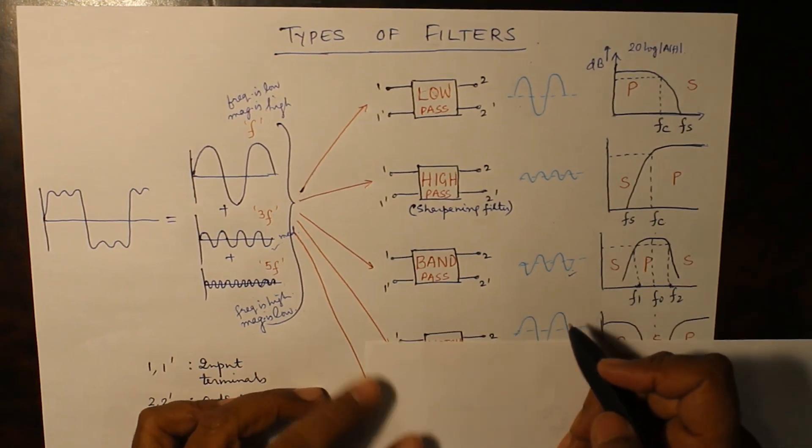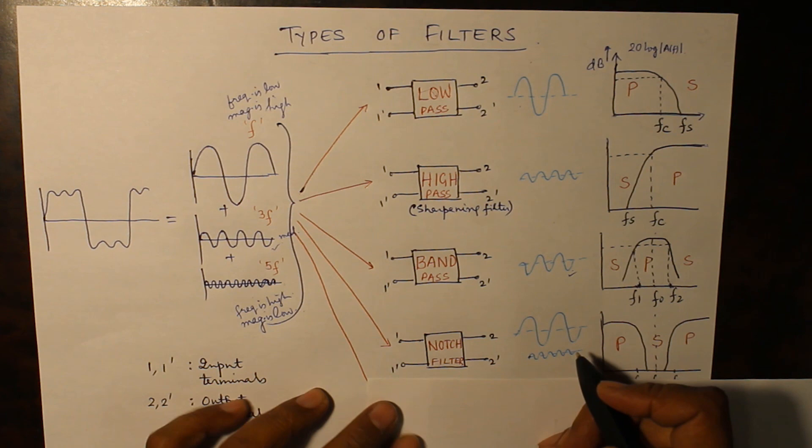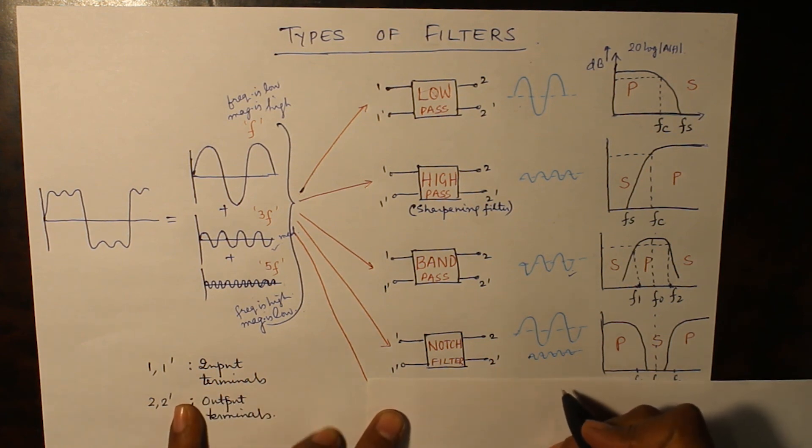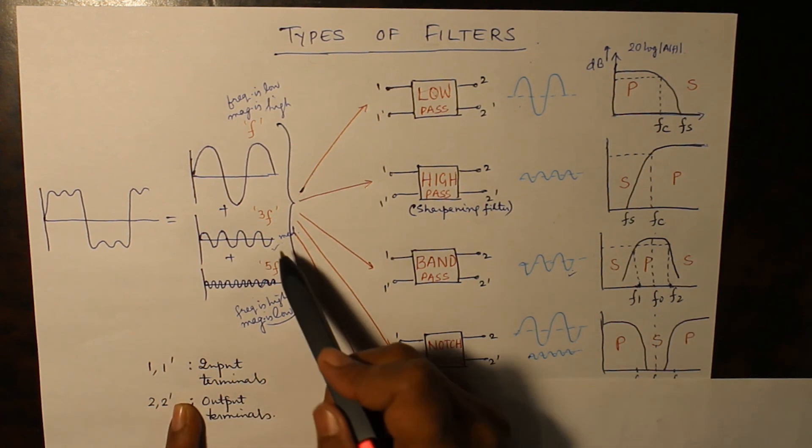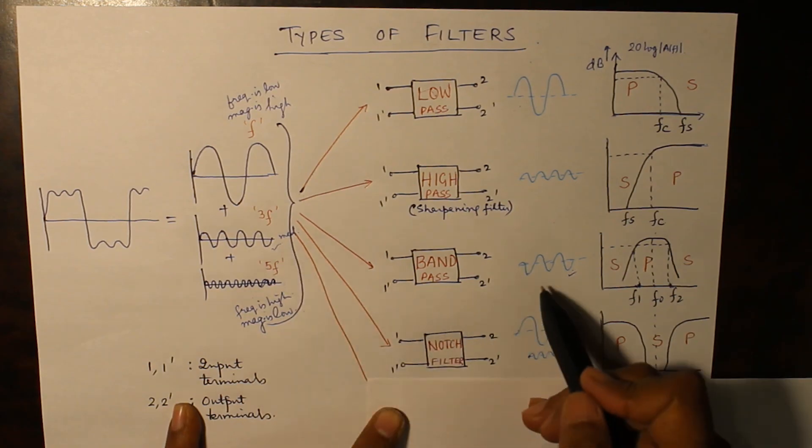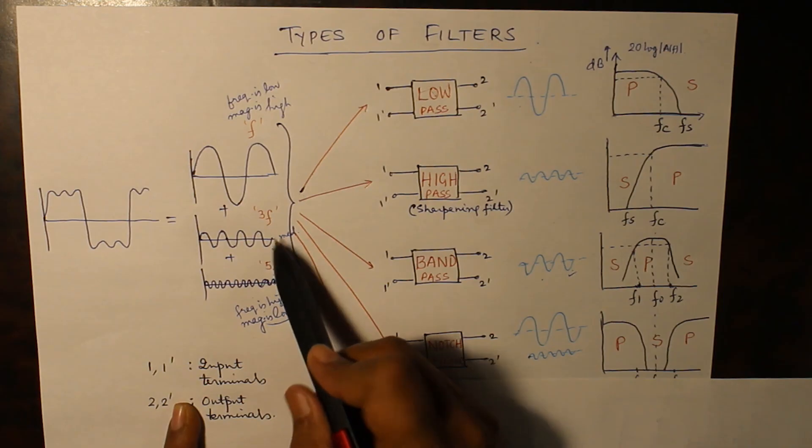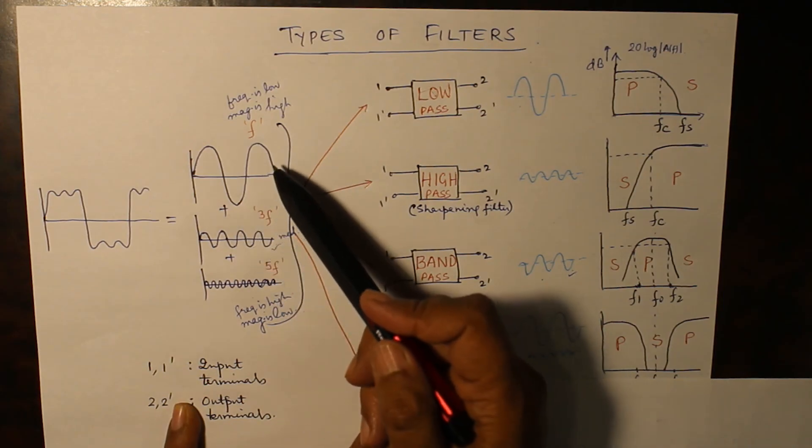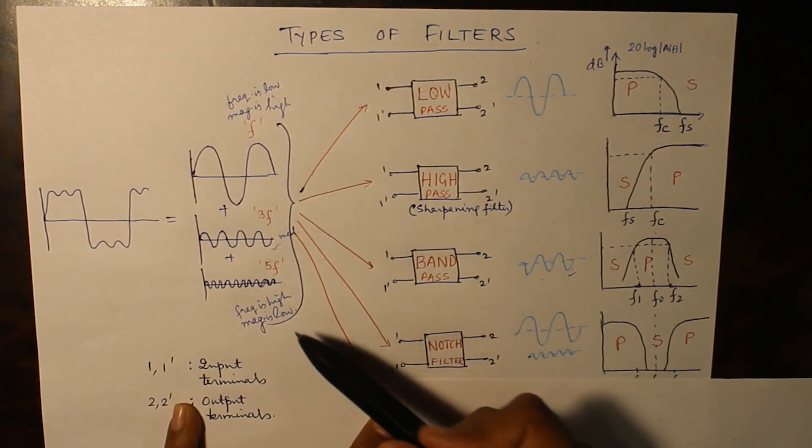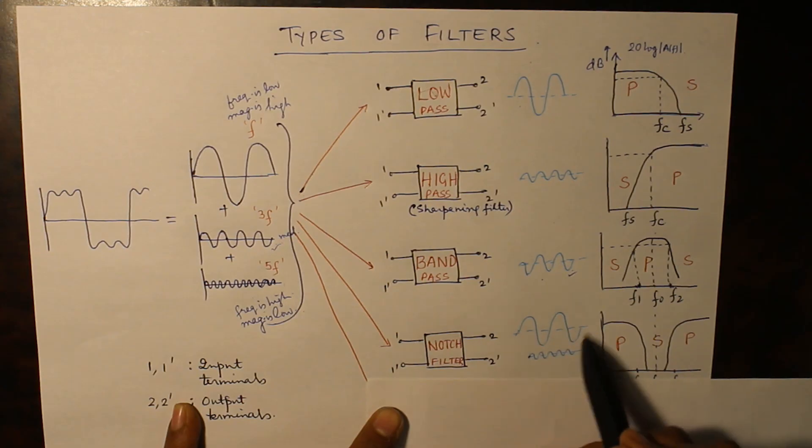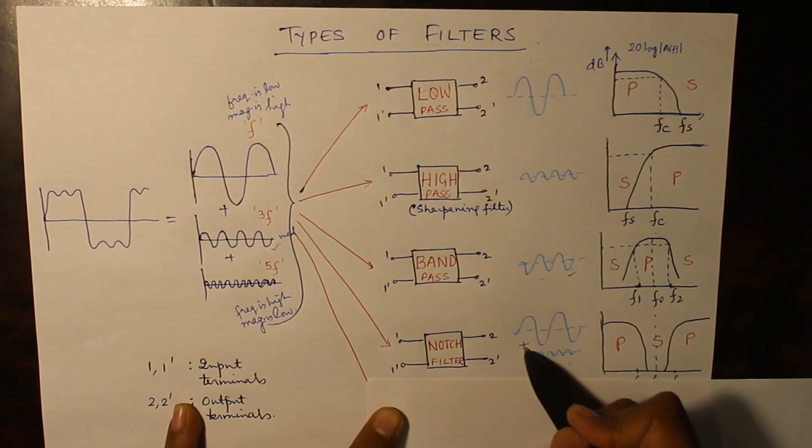The next one is the notch filter. What happens in notch filter is that we have rejected the medium frequency, and rest of the frequency, that is the low frequency and the high frequency component, they appear as it is in the output. So a combination of these two are appearing in the output.